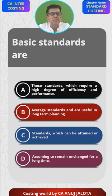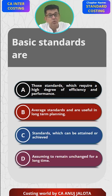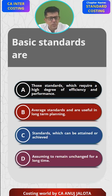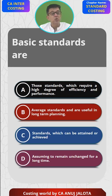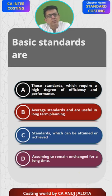Option A says standards which require a high degree of efficiency and performance — these are called ideal standards or theoretical standards. These can only be achieved if everything goes perfectly: no breakdowns, every working condition is superb. So A is not the answer. Option B — average standards used in long-term planning — means nothing too strict, nothing too loose, but basic standards are not those.